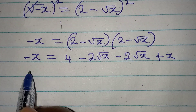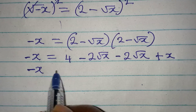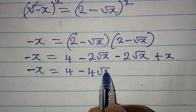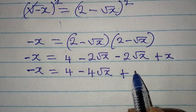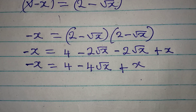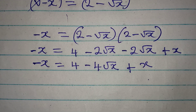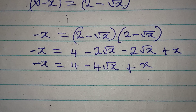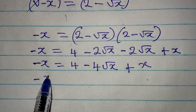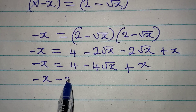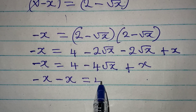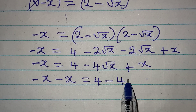Continuing from here, we get negative x equal to 4 minus 4 root x plus x. We need to collect like terms — bringing the x terms together, we get minus x on the left still, and the right side needs to be simplified.